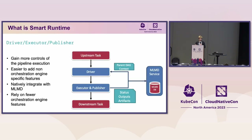To achieve this, we introduced new concepts called driver, executor, and publisher. In the driver, we store pipeline run tags and context — which node is this executor supposed to run? Once the executor finishes, the publisher uploads the outputs, artifacts, and status to our common metadata server called MLMD. So all pipelines, no matter which pipeline you use, can share the same parameters, metadata, artifacts, and status using just this MLMD metadata server.